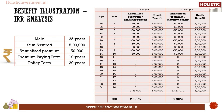As an investor, you need to fully understand the product and estimate the potential return before investing in any product. For this, we have analyzed the benefit illustration given in the sales brochure. A 35-year-old male opts for MaxLife Online Savings Plan for an annualized premium of Rs. 50,000. He pays a premium for 10 years and gets the fund value at the end of 20 years. He chooses balanced fund. The life cover is 10 times the annualized premium, i.e. Rs. 5,00,000. The assumed rates of return are 4% and 8% per annum.